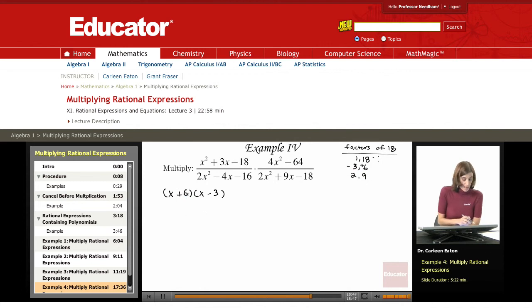You can always check by multiplying out: x squared minus 3x, inner terms 6x, that gives me 3x minus 18.